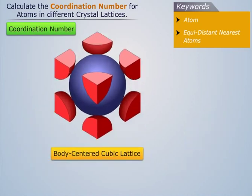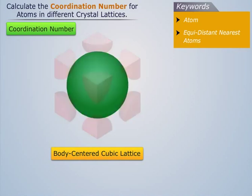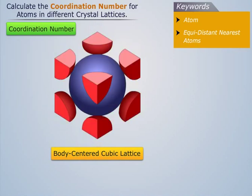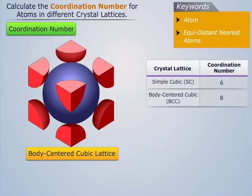We know that body-centered cubic lattice has eight corner atoms and one central atom. Here the central atom has eight equidistant corner atoms surrounding it. Thus the coordination number for the central atom in a body-centered cubic lattice is eight.